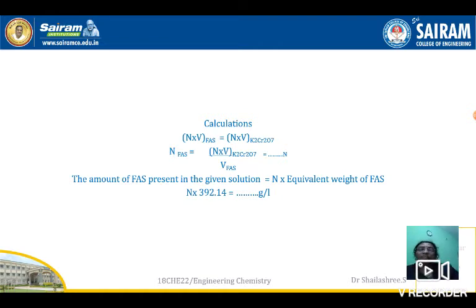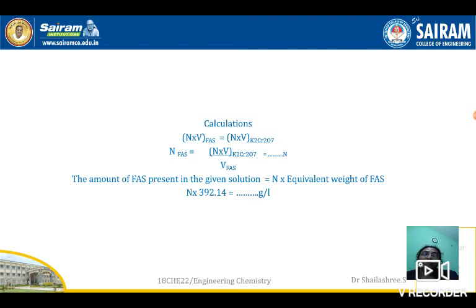The calculation is: Normality × Volume of FAS = Normality × Volume of potassium dichromate. The normality of potassium dichromate is given; the volume of potassium dichromate is obtained from the graph; and the volume of FAS (25 ml) is already given. From this you calculate the normality N of FAS. Then multiply the normality by its equivalent weight to get the amount of FAS present in the given solution per litre.